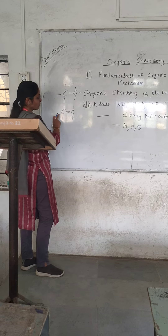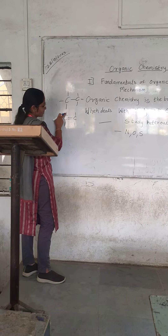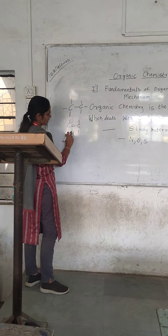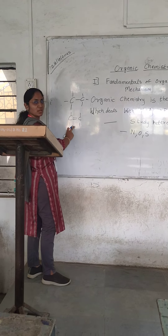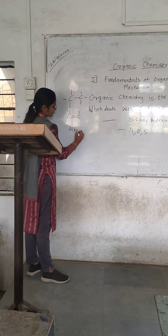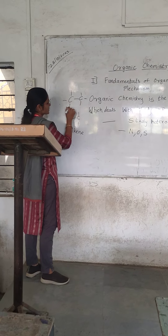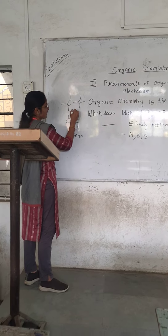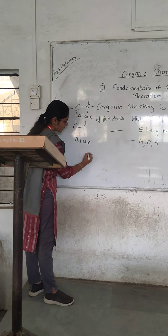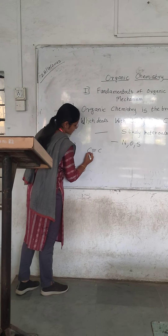Carbon has only four bonds — one, two, three, four. When carbon forms a double bond, that is called a double bond, and the compound is called an alkene. Carbon can also form a triple bond with each other.